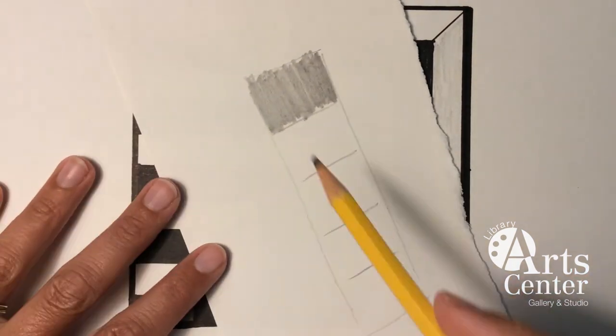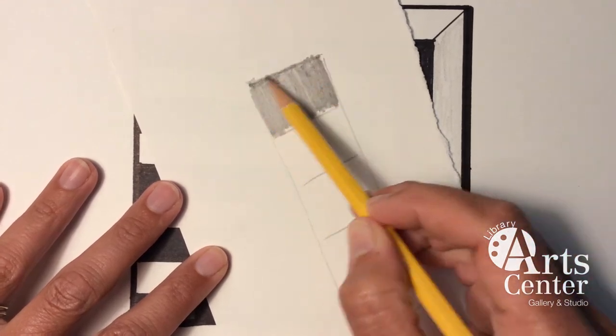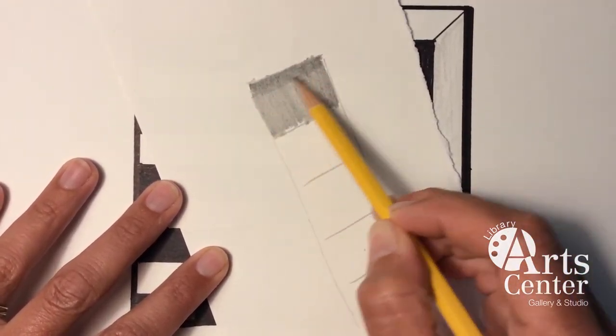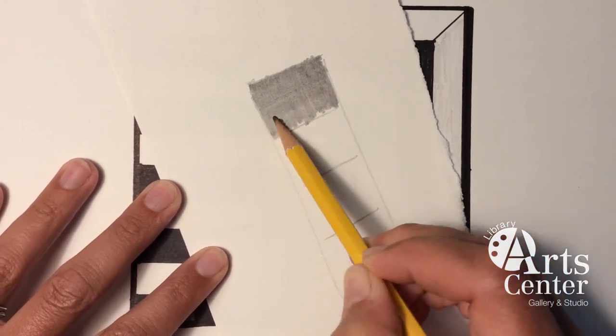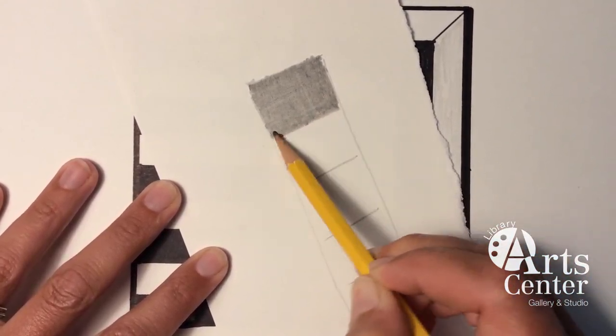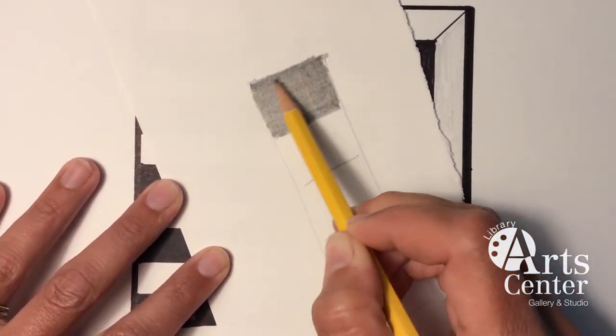I can also flip and I can color in the opposite direction to really intensify the darkness of that color. I'm again pushing down really hard.